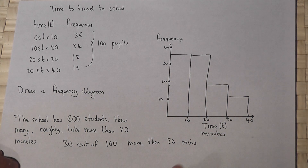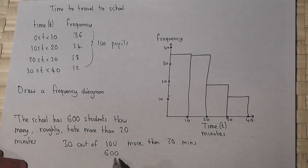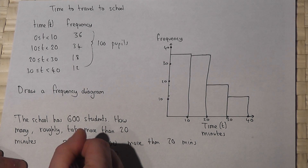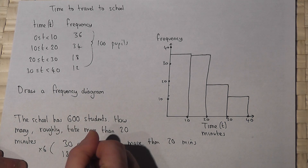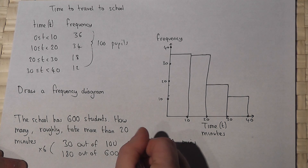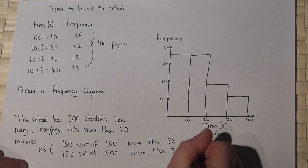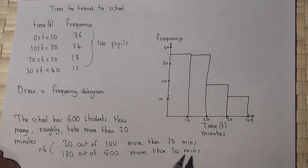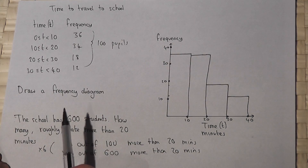So I can therefore estimate that if 30 out of 100 take more than 20 minutes, and there are 600 in the school, that's times by 6 — so roughly 180, which is 30 times 6, will take more than 20 minutes. It's an estimation, but probably a fairly valid one as long as this sample was not biased in any particular way.